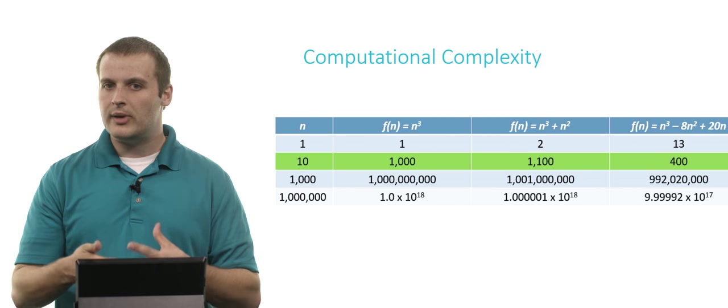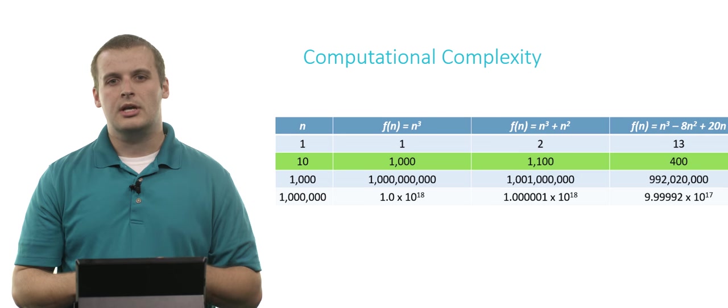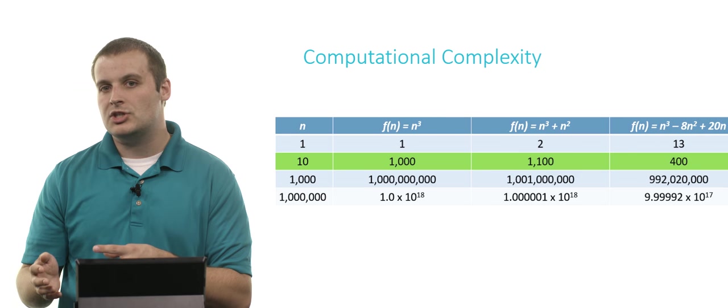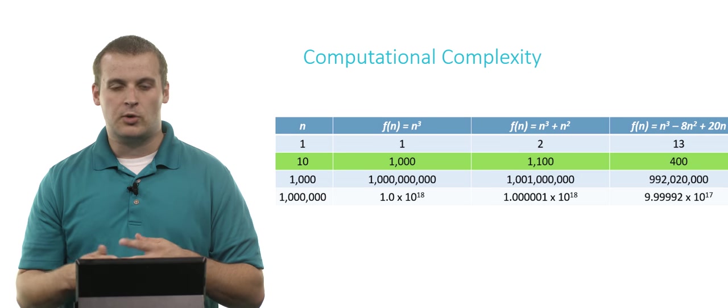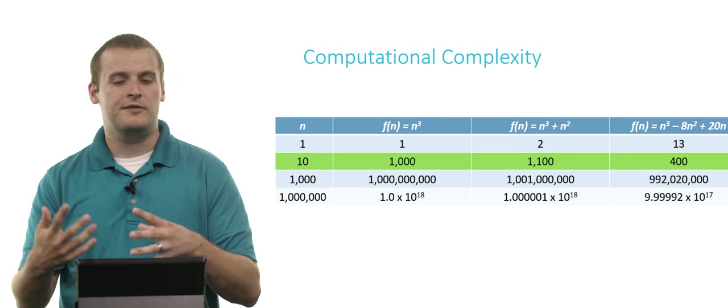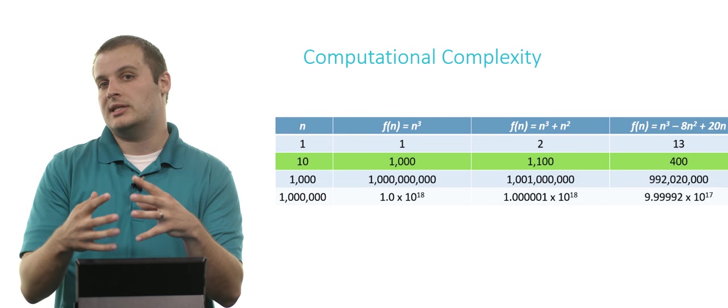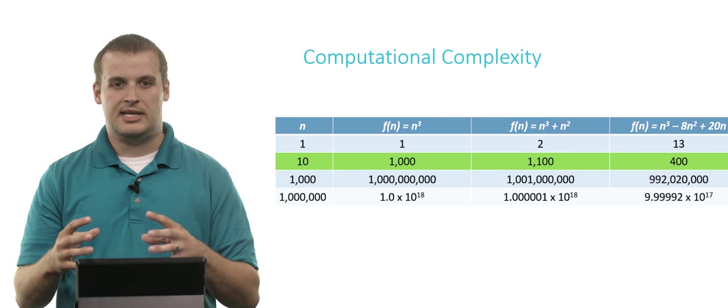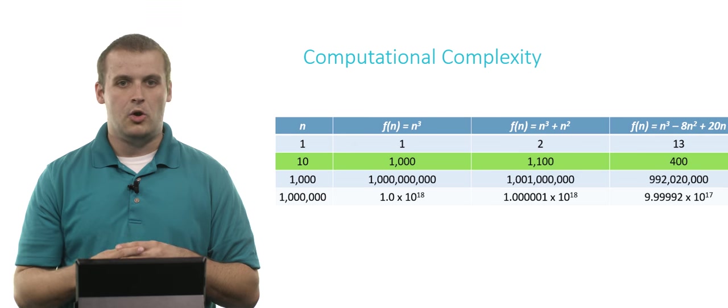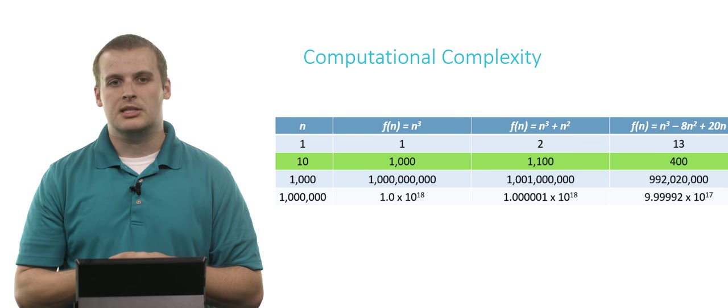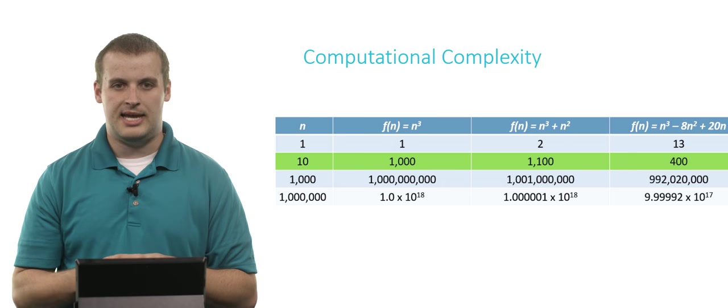If our data set is size 10, which is bigger but not necessarily huge, we can see that there's actually a bit of a difference, right? The third algorithm becomes more efficient. It's about actually 40% or 60% more efficient. It takes 40% the amount of time. It can take 400 units of resources to process a data set of size 10, whereas the first algorithm, by contrast, takes 1,000 units of resources to process a data set of size 10.